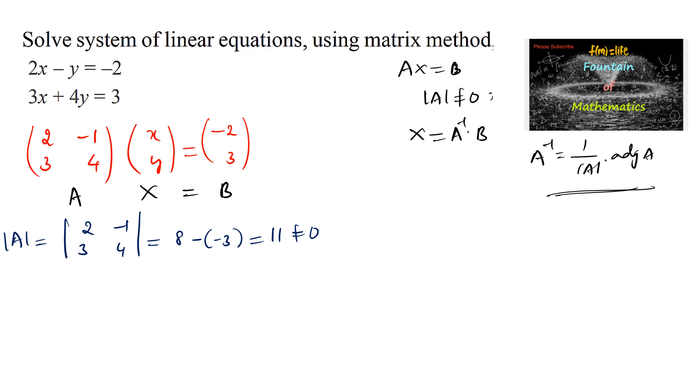So we can say the given system has a unique solution. We can write here A inverse is equal to 1 by delta A into adjoint of A, that is 1 by 11 into adjoint of A matrix. We can just replace the diagonal elements.